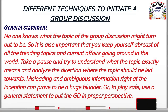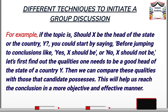Lastly, the general statement. This is the most common — and rather the most uninteresting — way of initiating a GD, but also the safest way if you do not want to experiment much. For example, if the topic is: should X be the head of state of country Y? Instead of jumping straight to conclusions like 'X should be' or 'X should not be,' you can say: let us first find out the qualities one needs to be a proper head of state, then compare whether those qualities are present in the candidate we are discussing. This will help you reach the conclusion in a logical manner.